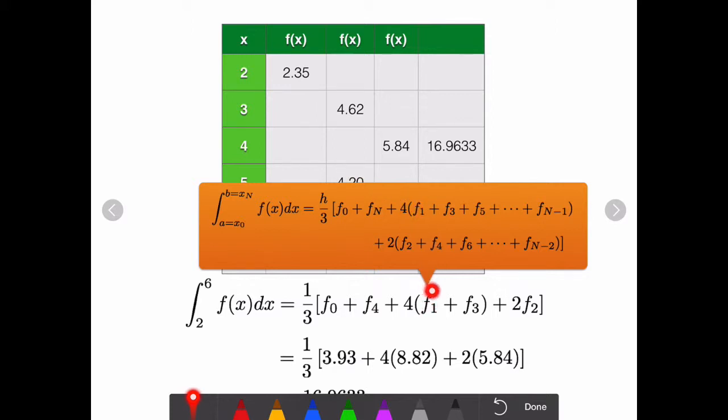For the odd numbers, f1 and f3, we put them in here and multiply by 4. That's why it's 4 here. For the even numbers, f2 is here, and we multiply by 2.